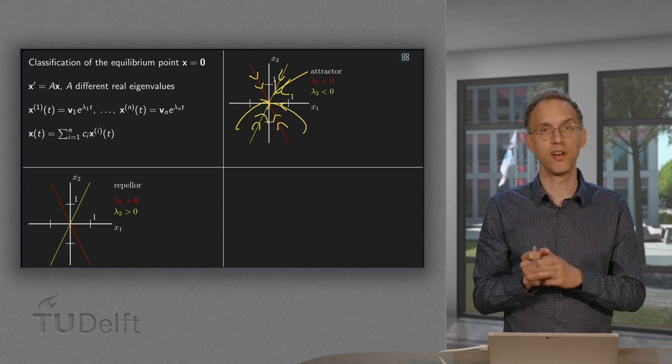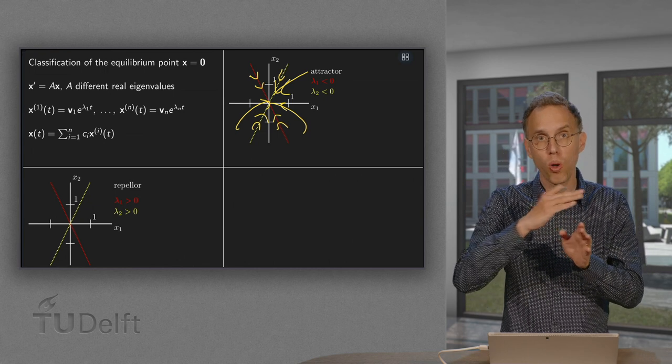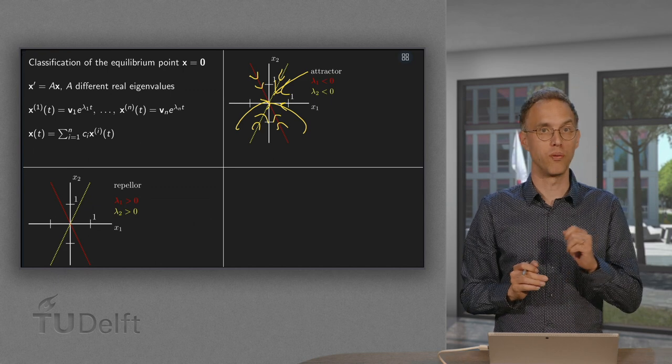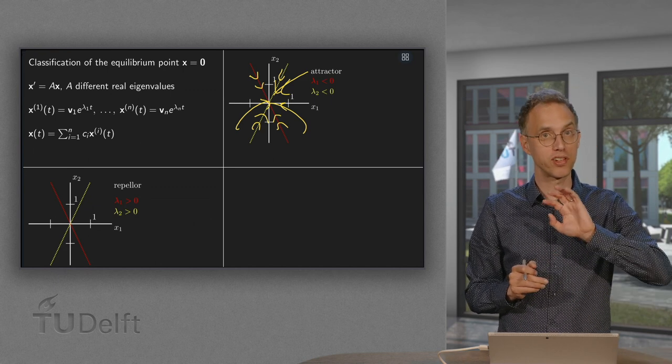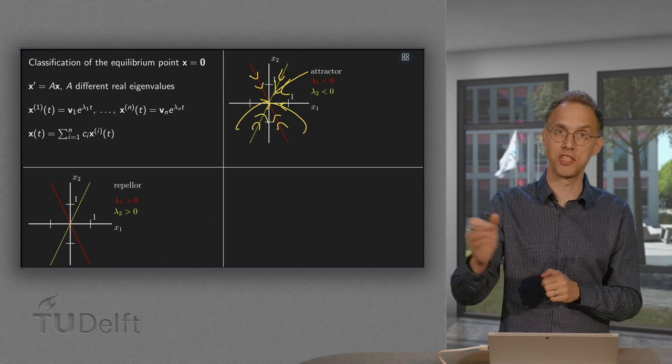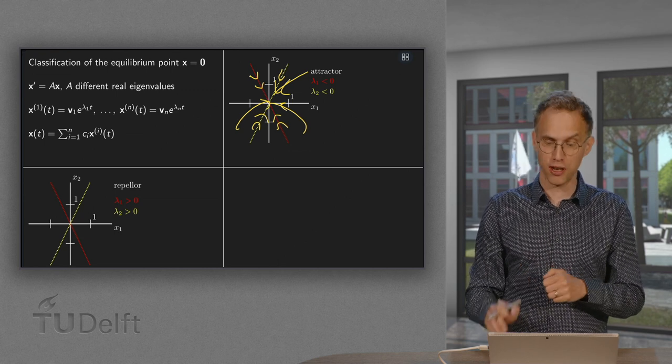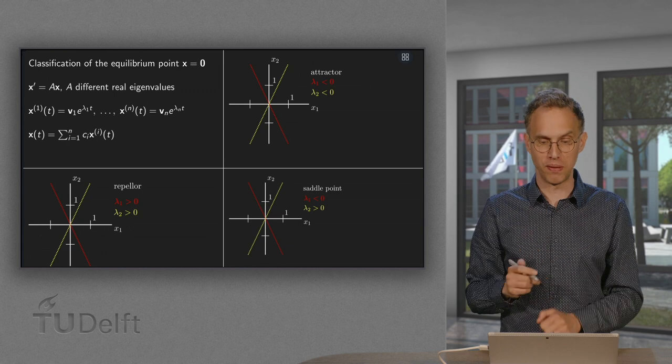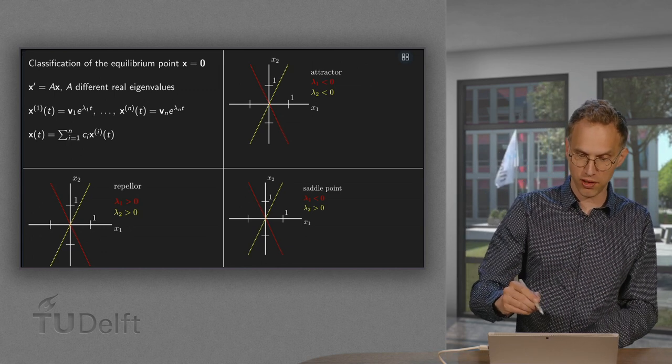So this is the case for two eigenvalues, similarly if all your eigenvalues are negative, then you have an attractor. So we know what happens if everything is positive. We know what happens if everything is negative. So we're left with the last case, if we have some mixture. So both positive and negative eigenvalues.